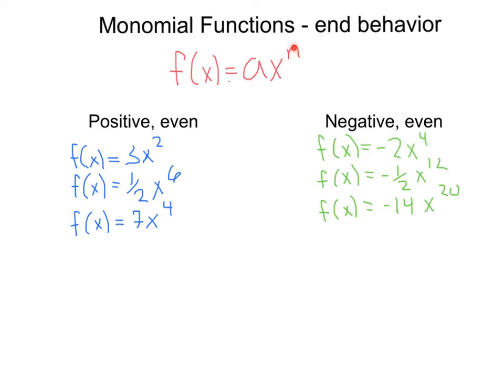So first let's take a case where the a is positive and the n is even. For example, we have f(x) = 3x², positive 3, an even exponent; f(x) = ½x⁶, again one half is positive, this is an even exponent; f(x) = 7x⁴, positive, even exponent. Whenever this is the case,